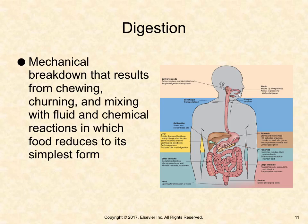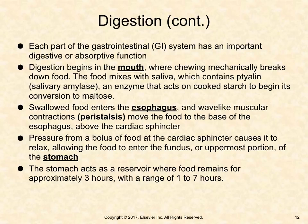Digestion is the mechanical breakdown that results from chewing, churning, and mixing with fluid, and chemical reactions in which food is reduced to its simplest form. Each part of the gastrointestinal (GI) system has an important digestive or absorptive function. Digestion begins in the mouth, where chewing mechanically breaks down food. The food mixes with saliva, which contains salivary amylase, an enzyme that acts on cooked starch to begin its conversion to maltose.